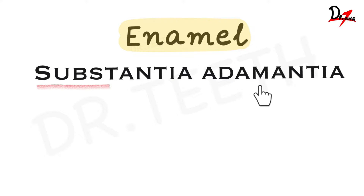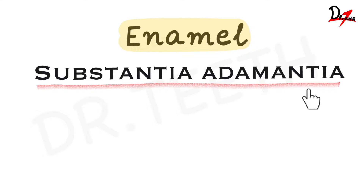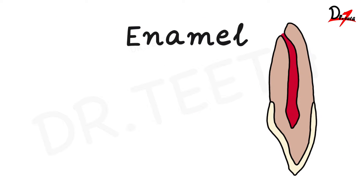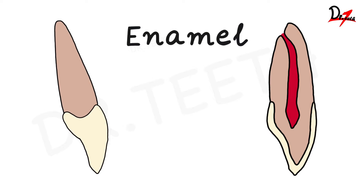Enamel is also called substantia adamantia — adamantia is a Greek word. Now, what is enamel? If you are new to dentistry, like this is your first year and you've never read this chapter before, you must be wondering what enamel is. In simple words, enamel is the outermost covering of the tooth. This yellow covering that you see here — this is the outermost covering, and that is called the enamel. Let me bring in another tooth so we can understand with two diagrams.